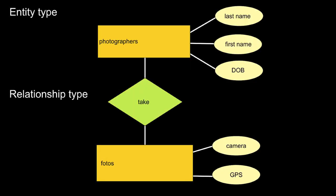Starting directly with an example: assume you have a photo agency with a couple of photographers who take photos. Photographers is the entity type, and this entity type has attributes: last name, first name, and date of birth. That is some of the stuff you may want to model — for the sake of simplicity, that's what I'll model here.